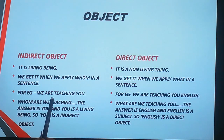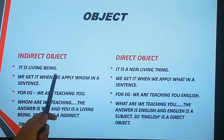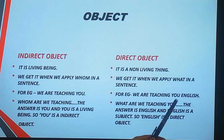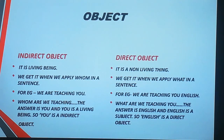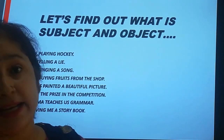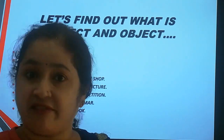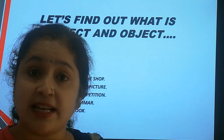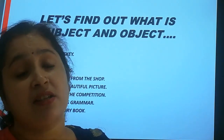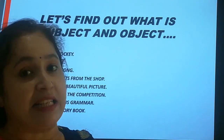You can understand with the help of these examples. We are teaching you. Whom are we teaching? The answer is 'you.' So 'you' is an indirect object, and it is also a living being. In the same way, what are we teaching you? We are teaching you English. So English is a direct object. Now students, you are able to differentiate between indirect object and direct object. When we apply 'whom' in a sentence, we get indirect object. And when we apply 'what' in a sentence, we get direct object.